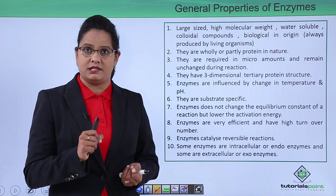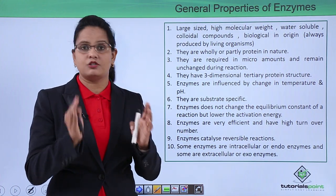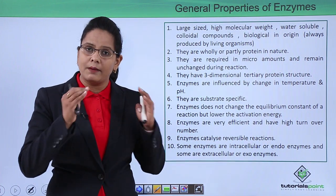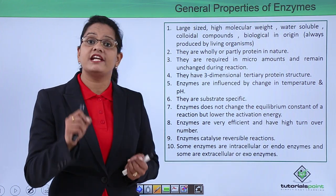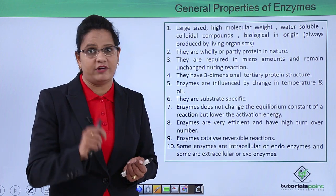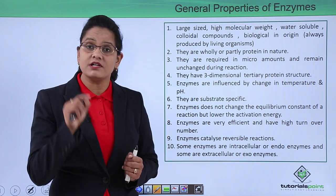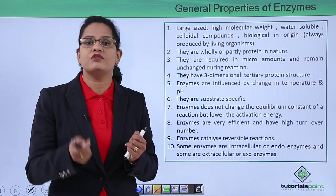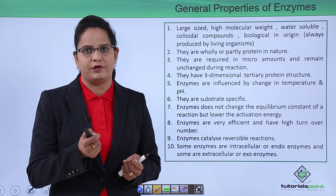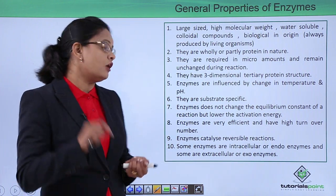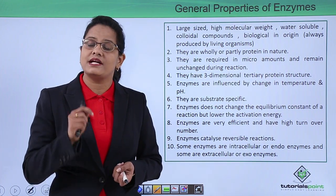Enzymes are very specific about which substrate they act on — they are substrate specific. They do not change the equilibrium constant; if a reactant is converted into product, the equilibrium between them is unchanged. Only the speed of the reaction is increased by lowering the activation energy. Enzymes have a very high turnover number, making them very efficient. Enzymes usually catalyze reversible reactions, so most metabolic reactions are reversible, unlike some laboratory chemical reactions. Enzymes can be intracellular or extracellular.